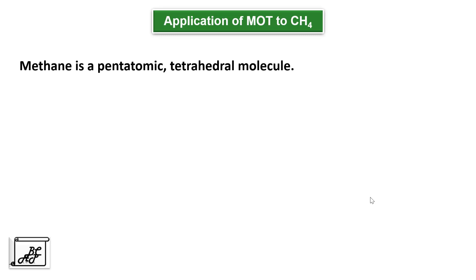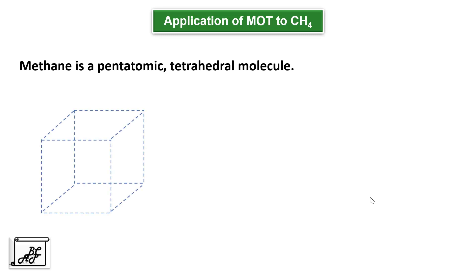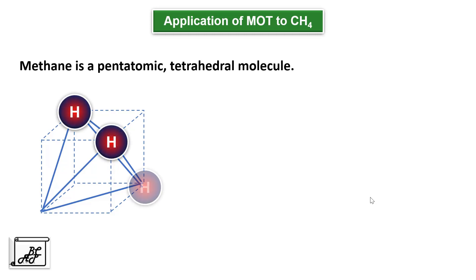Methane is a pentatomic tetrahedral molecule. This can be imagined with the help of a cube, where alternate corners of a cube are occupied by the corners of a tetrahedron. In the methane molecule, hydrogen atoms are at the corners of the tetrahedron and the carbon atom is situated at the center of the tetrahedron.